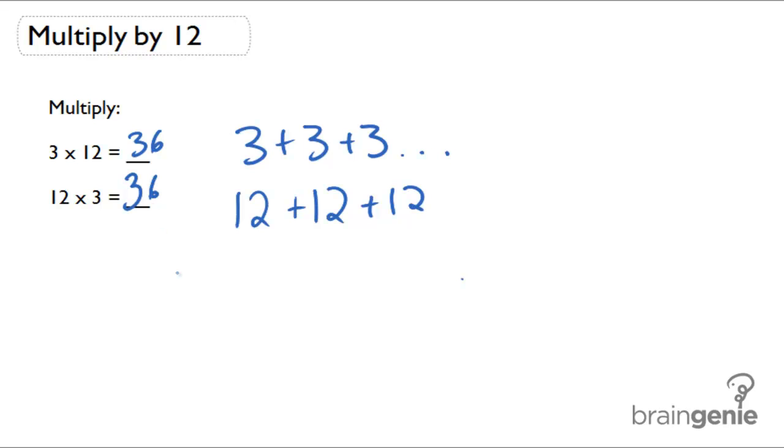And so that's the same answer for each one of those. Whichever way you think about it, it's going to get you the same answer. And you can also always check your multiplication table to see if you got that right. 3 times 12 or 12 times 3 should be the answer of 36.